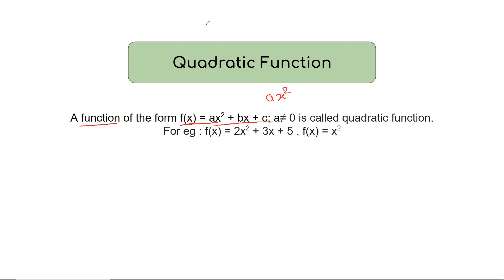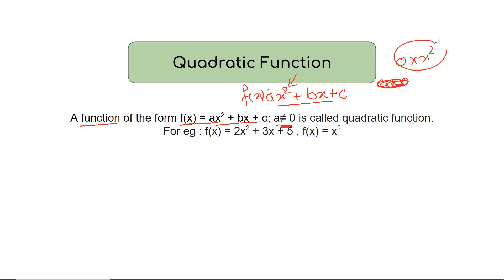What is x squared? What is degree 2? What is bx plus c? What is a quadratic equation — a function defined? If a equals 0, then 0 into x squared plus bx plus c becomes linear. So a doesn't equal to 0. That is important.